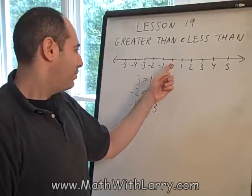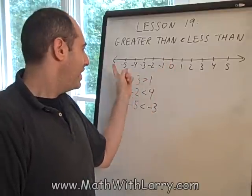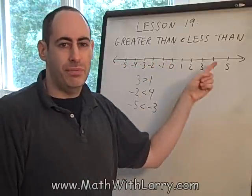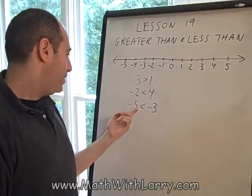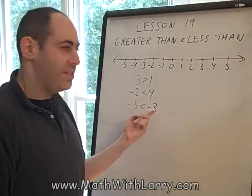You have to be careful because if you notice on a number line, the negative side is really the mirror image of the positive side. Everything is kind of backwards in a sense, and that shows us that negative 5 is less than negative 3.